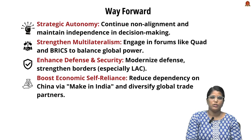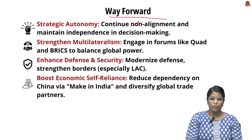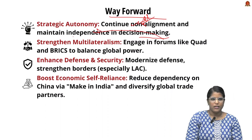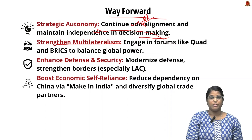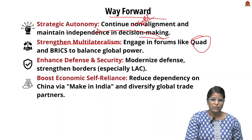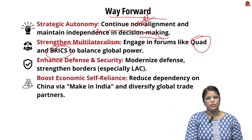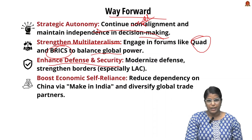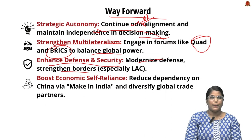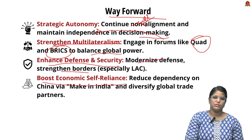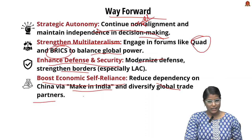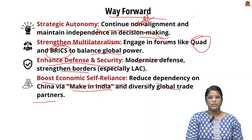For the way forward: First, continue non-alignment and maintain independence in decision-making to preserve strategic autonomy. Second, strengthen multilateralism by engaging with the US in forums like QUAD and with BRICS countries including China, balancing global power. Third, enhance defense and security by modernizing defense capabilities and strengthening borders. Fourth, India should boost economic self-reliance through 'Make in India' and diversify global trade partners to counter China's influence.